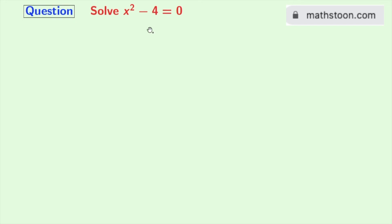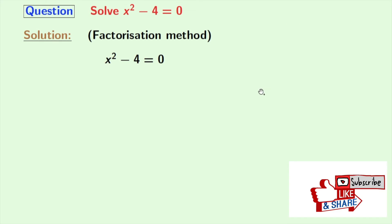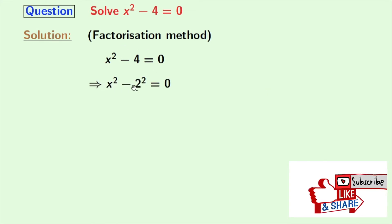Next, to solve the same equation, we will use the factorization method. So this is our given equation. Rewriting 4 as 2 squared, we get x squared minus 2 squared is equal to 0.